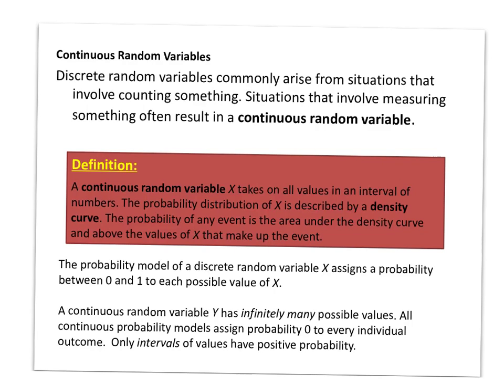One of the big differences between discrete and continuous random variables is that discrete usually involves counting something. Like in the previous video, I was counting the number of heads that I can get every time I flip a coin three times. Sometimes when we're measuring something, this is a continuous random variable.